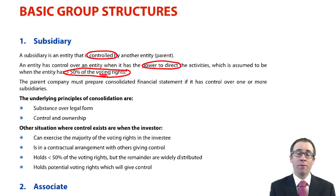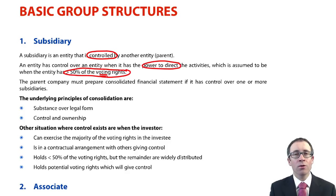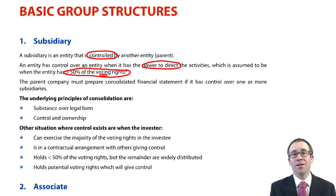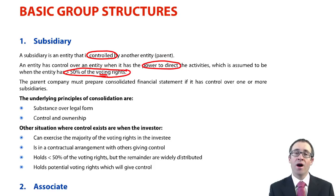The key concept we went through when preparing group accounts within F7 was looking at control and ownership. Control was shown within the statement of financial position and statement of profit or loss and OCI by adding across 100% of the parent and 100% of the subsidiary — assets, liabilities, income, and expenditure — on a line-by-line basis. We took all of P and all of S, provided that we had control.